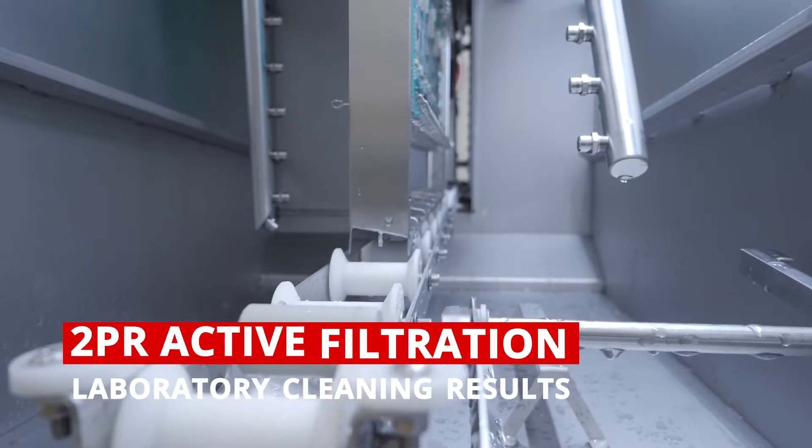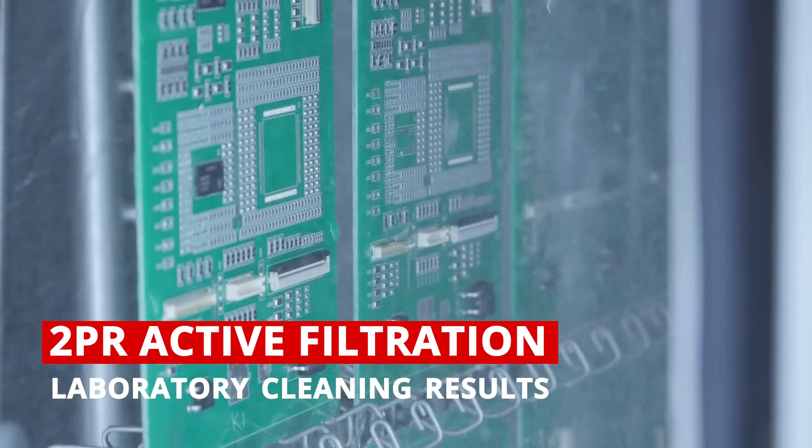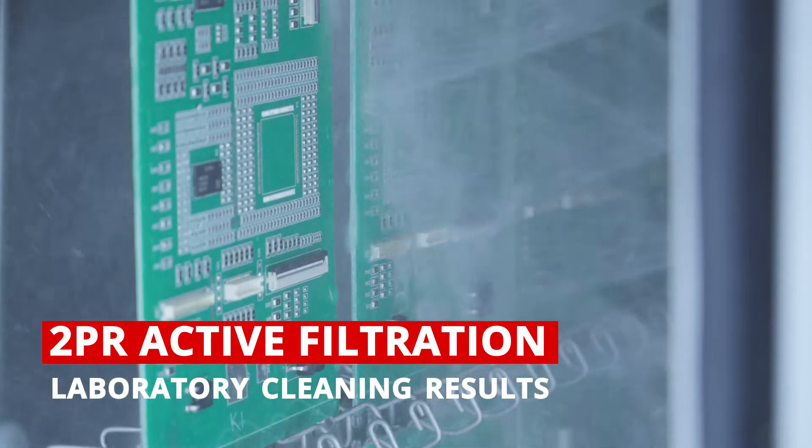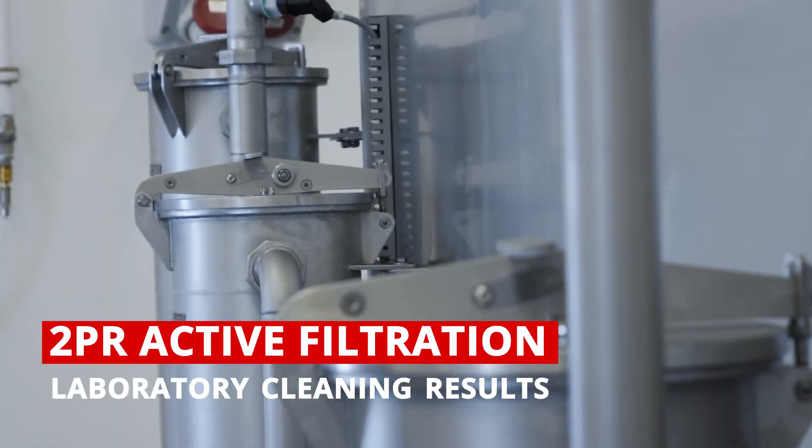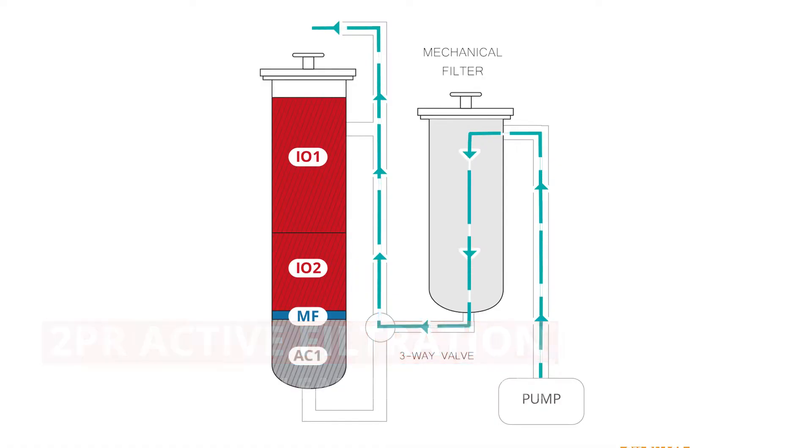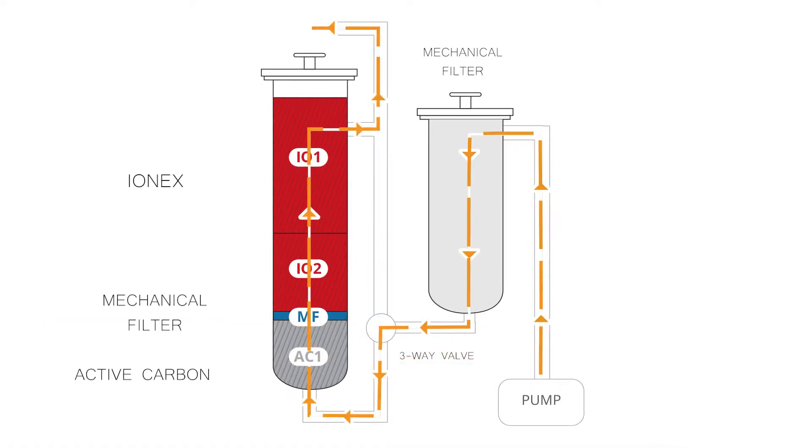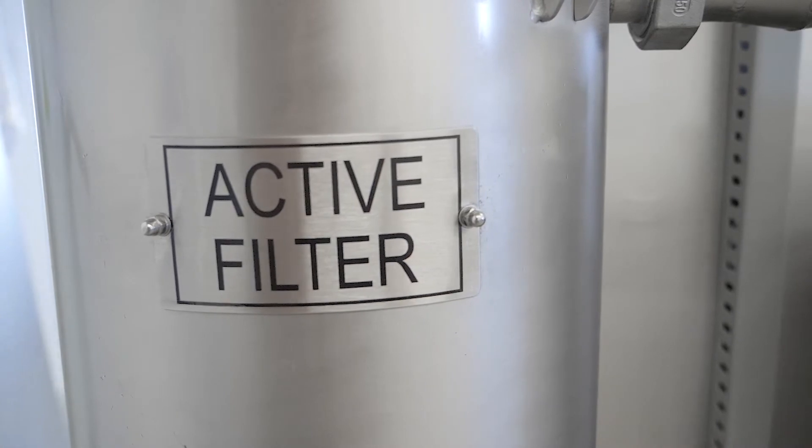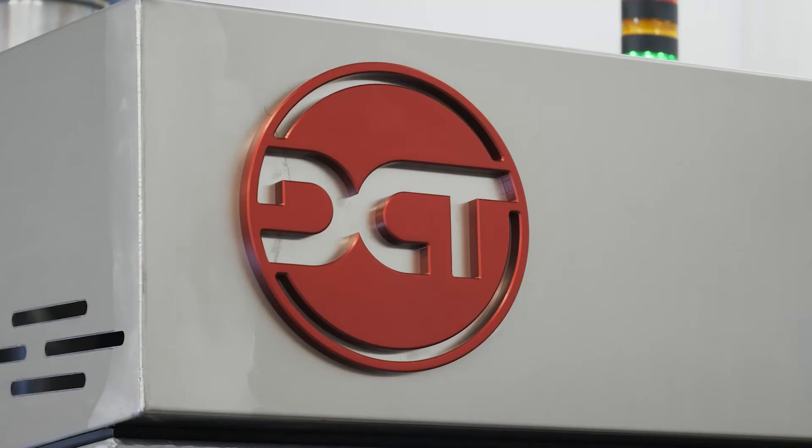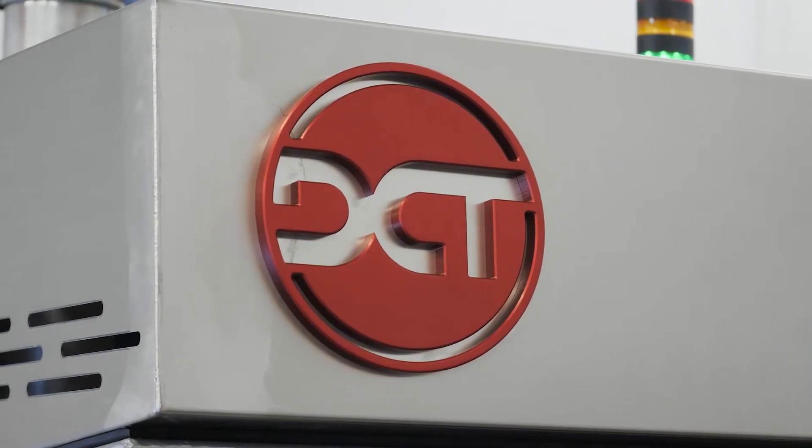One of the optional accessories especially recommended for PCB cleaning is our unique 2PR active filtration. It uses active carbon and ionics to maintain the conductivity in the process. Thanks to this feature you can achieve laboratory cleaning results. With this technology, the conductivity of DI water coming into the chamber is under 1 microsiemens.